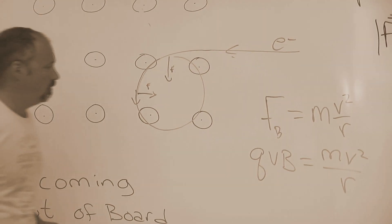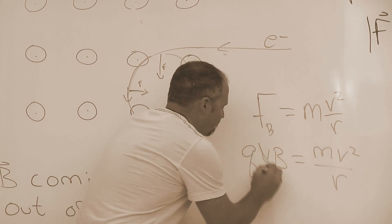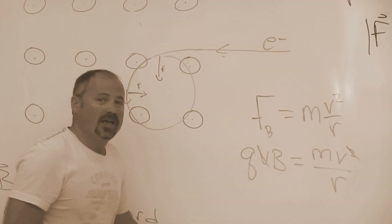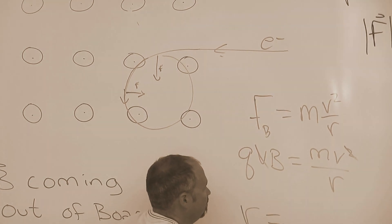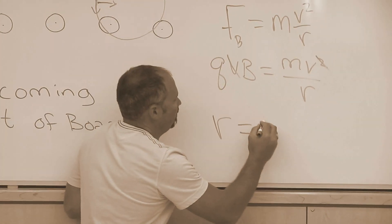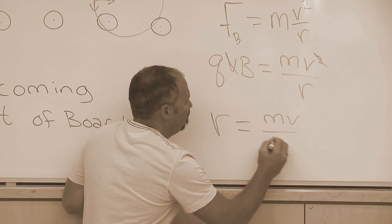And we can cancel that here, cancel that there. And we can then solve for the radius of the circle by doing a little bit of algebra, and you would get mv divided by qB.